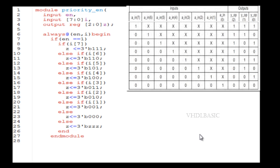This is the example Verilog code of the priority encoder. Please like this video, share, and subscribe to this channel for more.